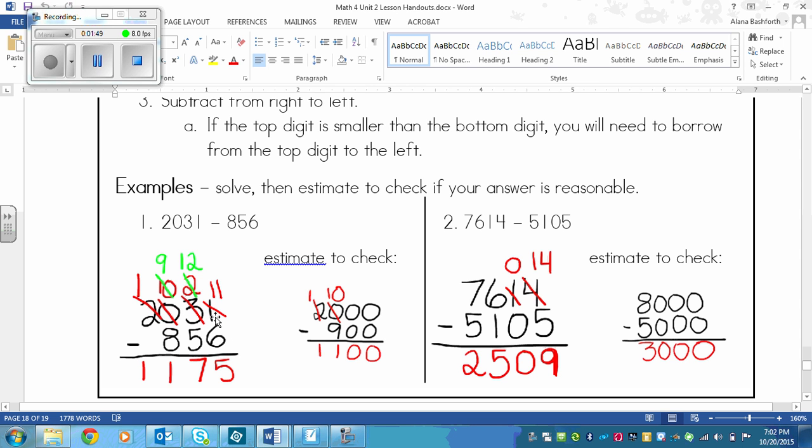And then you subtract from right to left. So first off, we have one minus six. Now you cannot take six away from one. So that means one needs to borrow from three. So three turns into a two. And one becomes 11. Remember, we put a one in front of the one so that it is 11. Then we can subtract. So 11 minus six is five.